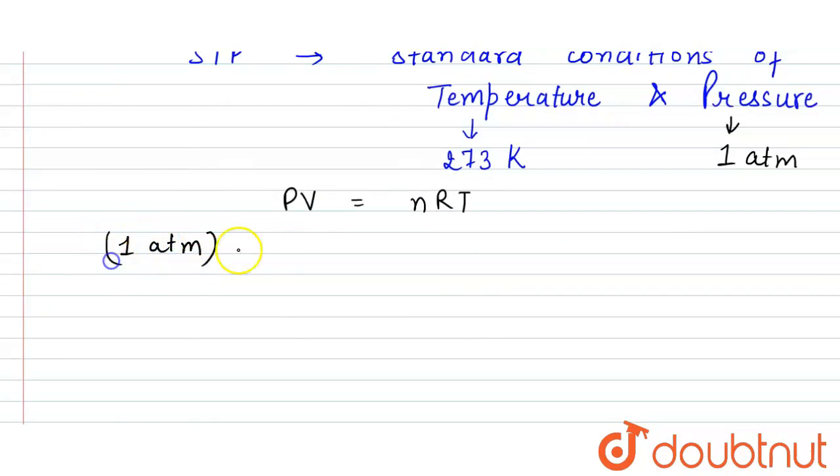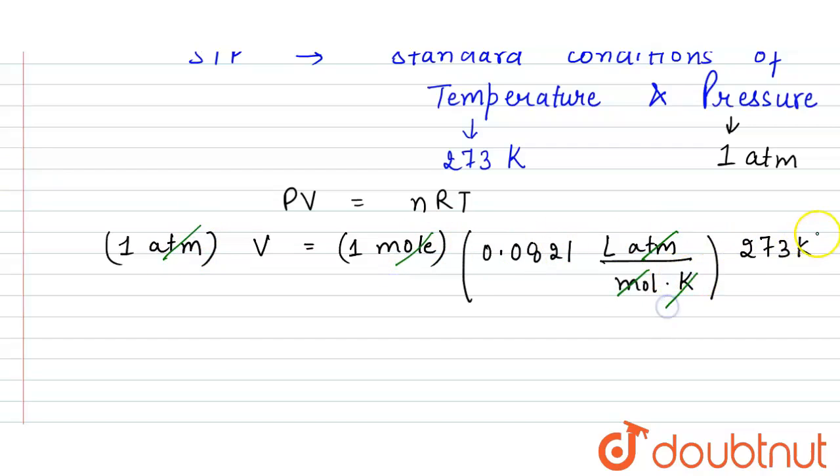Volume we need to calculate. Number of moles - we defined it as volume occupied by one mole, so it is one mole. For R, we have the value - R is the gas constant, so R value is 0.0821 liter atmosphere per mole Kelvin. And here we have the temperature that is 273 Kelvin. So from here, atmosphere will be cancelled out, mole cancelled out, Kelvin is cancelled out with Kelvin.